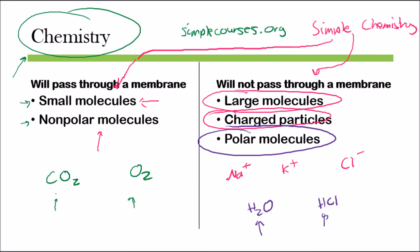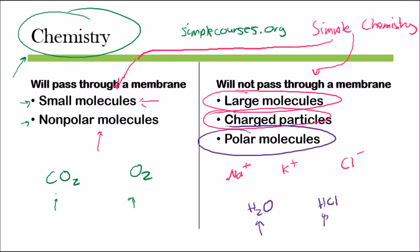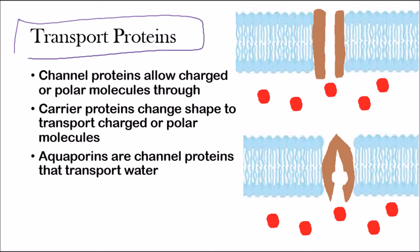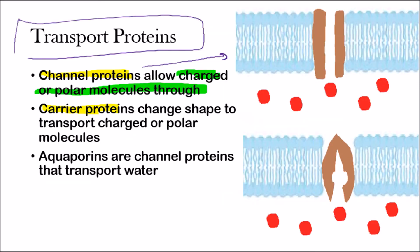So how does a cell ever pass molecules like charged particles or polar molecules, since sometimes the cell does need them? The way it solves this problem is by using transport proteins. There are two types: channel proteins and carrier proteins. Channel proteins allow charged or polar molecules to pass through — things like water, sodium ions, potassium ions, or chloride anions.